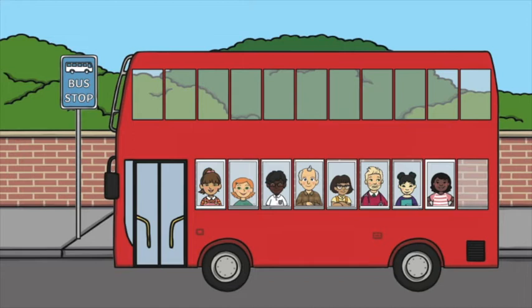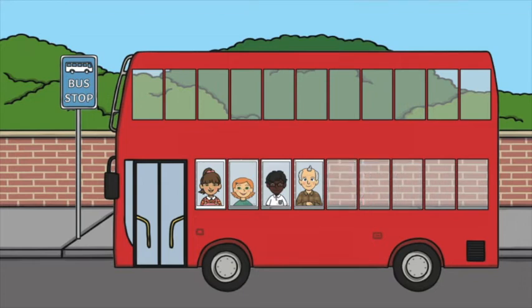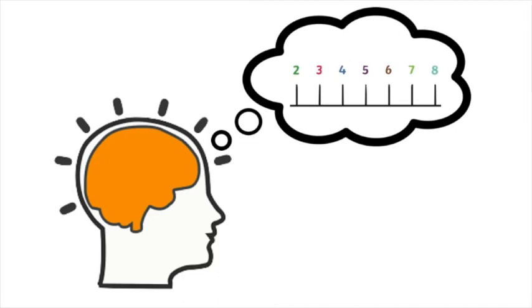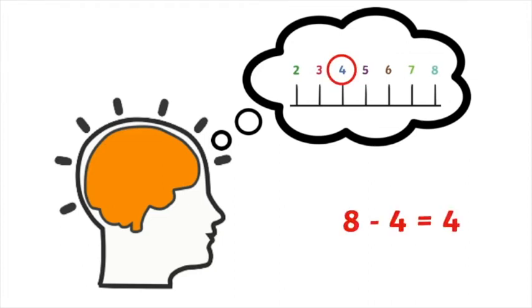First there were eight passengers on the bus. Then four passengers hopped off. Now how many passengers are on the bus? Four. Eight take away four equals four. Imagine a number line starting at eight and count back four: one, two, three, four. The answer is four. Eight take away four equals four.